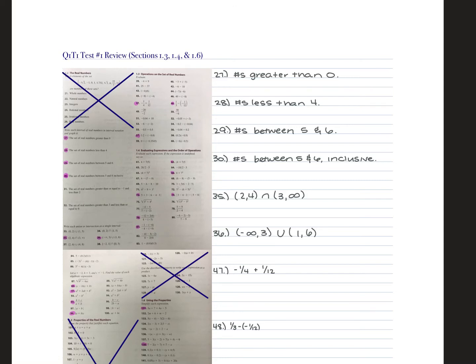This is our test one review. Your test is on sections 1-1, 1-2, 1-3, 1-4, and 1-6. You will have questions on your test similar to what your quiz started with, where you're given a set of numbers for A, a set of numbers for B, a set of numbers for C, and you're asked to find the union of like A and B or the intersection of something like B and C.